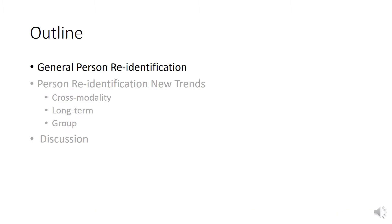My presentation includes three parts. The first part is general person re-identification. I will introduce what is the research topic, person re-identification and its applications — we can also name this as general person re-ID. The second part is person re-identification new trends, which is the main part of my presentation, including three kinds of trends. In the third part, I will conclude with a discussion of some future research directions.